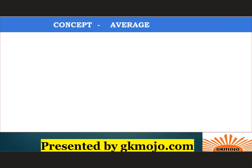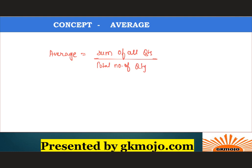So basically, what is an average? Average is defined as the ratio of sum of all terms in a group to the number of items in the group. So basically, average is equal to sum of all quantities upon total number of those quantities.